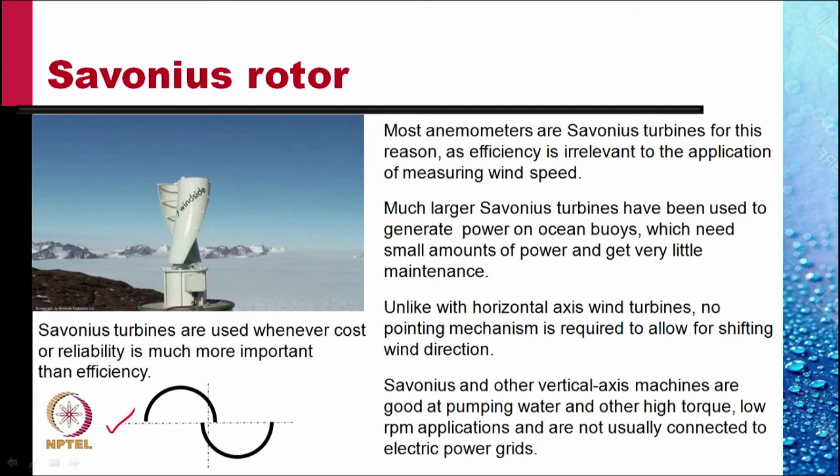In an anemometer where reliability is more important than the power output, we use Savonius rotors. Much larger Savonius turbines have been used to generate power on ocean buoys, where again the reliability and the need for service and maintenance should be low. Unlike with the horizontal axis wind turbine, no pointing mechanism is required to allow for shifting wind direction. Savonius and other vertical axis machines are good at pumping water and other high torque but low RPM applications and are not usually connected to electrical power grids.